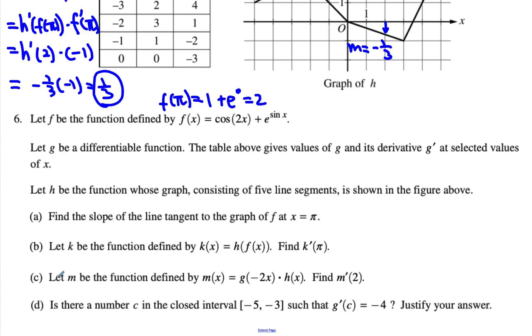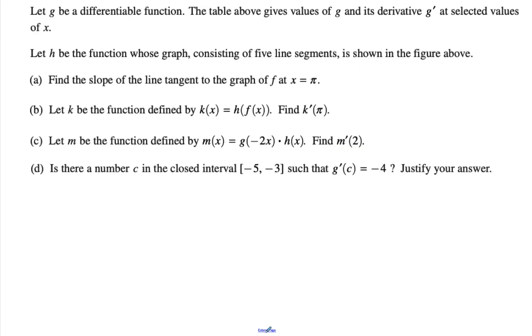Let's look at part c. Let m be the function in this way. Find m prime of two. So then in this case what we're going to be doing is m prime of x. We have to use the product rule. So first g prime of the inside, but by the chain rule I got to multiply by negative two on the outside times h of x, plus g of negative 2x times h prime of x.